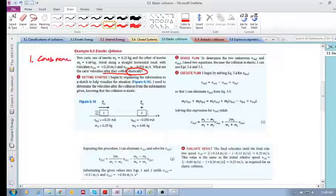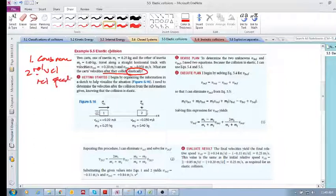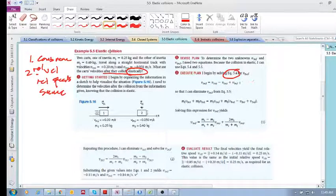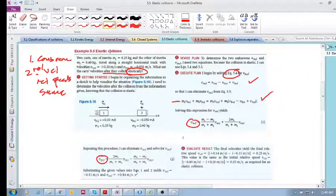Conservation of momentum and number two, the relative velocities or the relative speeds are the same before and after. We've got equation 5.4, which is just saying the relative speeds before and after are the same. And then we've got the conservation of momentum. So there are our two tools. We use these tools. I'm not going to go through the details, you can do this. I'm trying to give you the big picture. And so we can solve for v1 final here and we can solve for v2 final there.